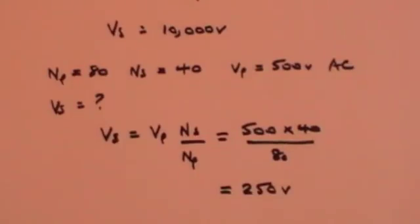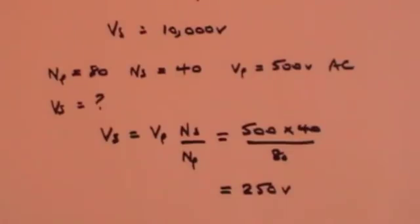I remind you once more: it only works with alternating current, because with alternating current you get a varying magnetic field which is proportional to the current. So if the current is changing, the magnetic field is changing, and you only get induced currents where you have changing magnetic fields.